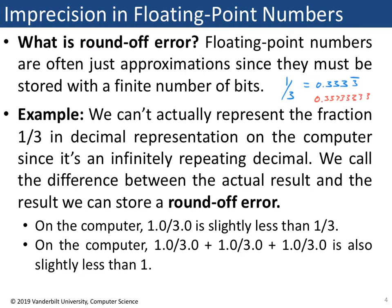So if we do the operation 1 divided by 3 and store the results into a variable — 1.0 divided by 3 as a floating point literal divided by floating point literal results in a floating point value — and we do 1/3 plus 1/3 plus 1/3, this should equal 1.